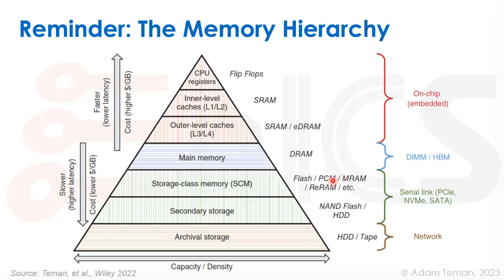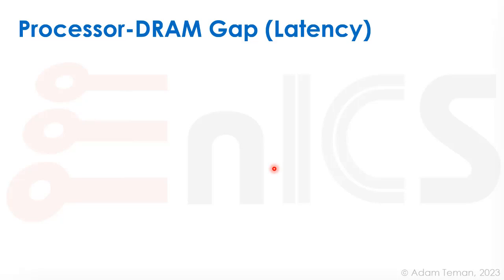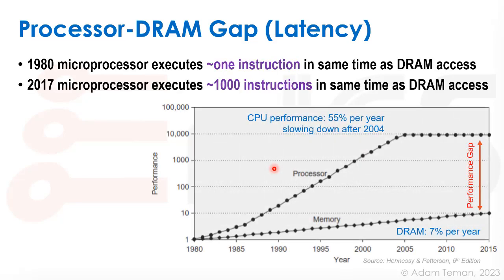So that's the basic memory hierarchy. Now we're going to go over how this works inside a computer architecture. This subject is really important because of what is known as the processor-DRAM gap. In 1980, a microprocessor could do one instruction in about the same time as a DRAM access. But a few decades later, a microprocessor already executes about a thousand instructions in the same time as a single DRAM access. The reason is that processor performance went up very quickly — exponentially — whereas memory performance went up much, much slower.